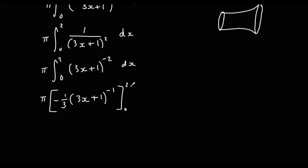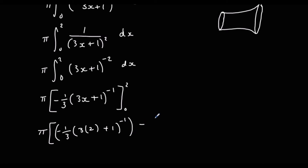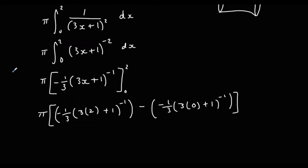Substituting in 2 and 0: we get minus a third times (3×2 plus 1) to the power of minus 1, take away minus a third times (3×0 plus 1) to the power of minus 1. We can type this into the calculator and we get 2π/7. I write units cubed because we're doing a volume.